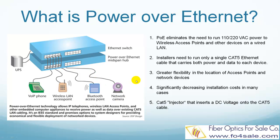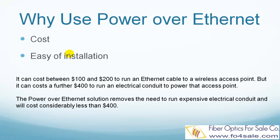The main reason to use Power over Ethernet is cost and ease of installation. For example, it can cost between $100 and $200 to run an Ethernet cable to a wireless access point, but it can cost a further $400 to run an electrical conduit to power that access point. PoE technology removes the need to run expensive electrical conduit and saves this $400.